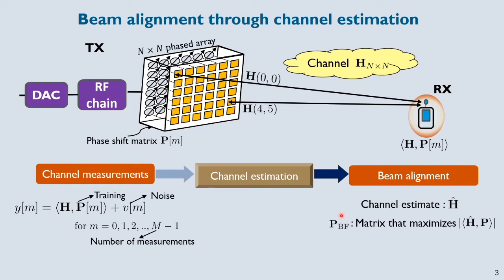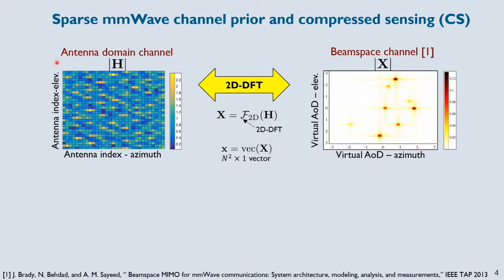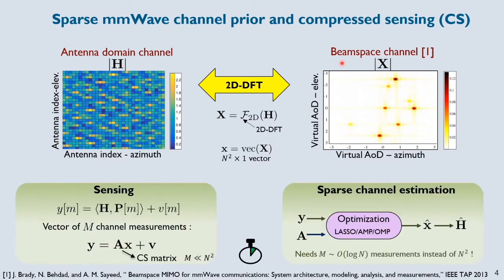To estimate this N-cross-N channel, we need the number of measurements to be at least N-squared. Due to the use of large antenna arrays at millimeter wave, this vanilla approach through channel estimation can result in substantial training overhead. This overhead can be reduced by exploiting prior information on H. One natural prior exhibited by millimeter wave channels is sparsity — while the antenna domain channel is dense, taking its two-dimensional discrete Fourier transform yields a beam space channel which is approximately sparse. Compressive sensing is one technology that exploits this sparsity to estimate channels from as few linear measurements as possible.